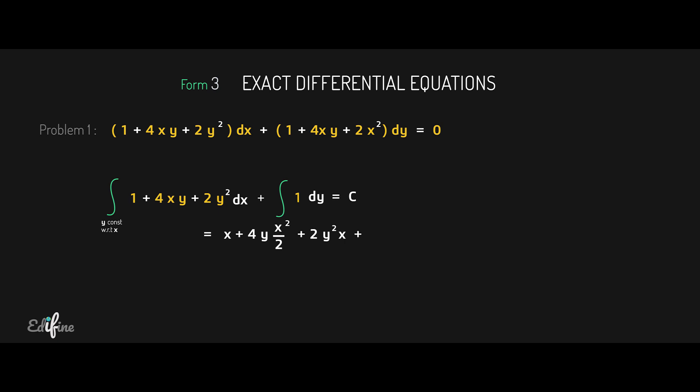The integral of 1 dy gives y. Hence the solution is: x + 2x²y + 2xy² + y = z.